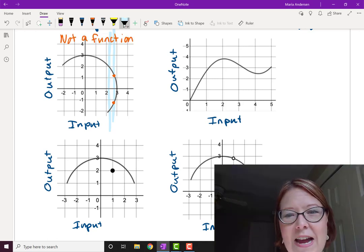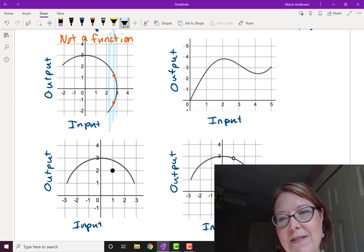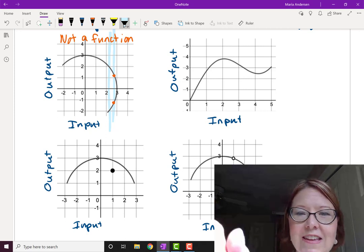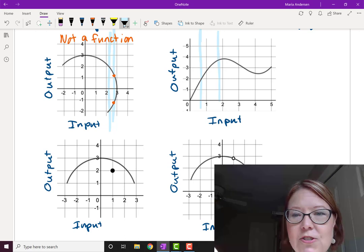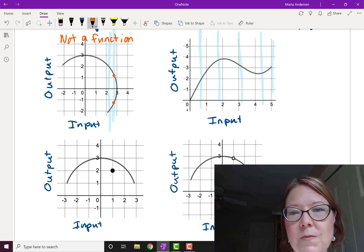The second graph is a curve that increases to 2 and then decreases to 4 and then increases to 5. And any vertical line we draw through this one is only going to pass through at one point. And for that reason we can say that this one is a function.